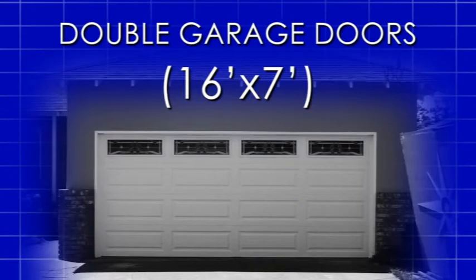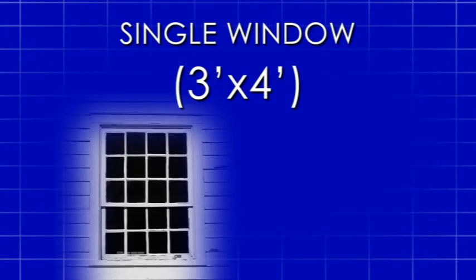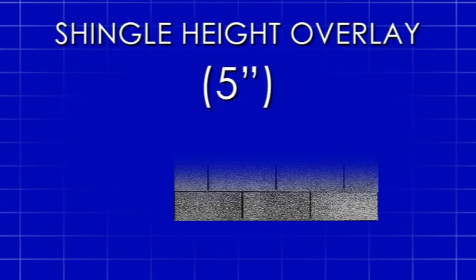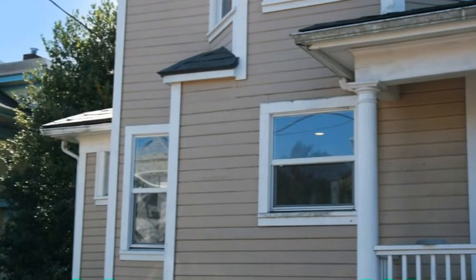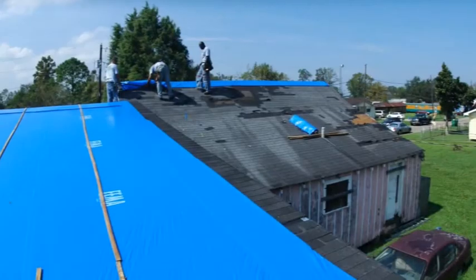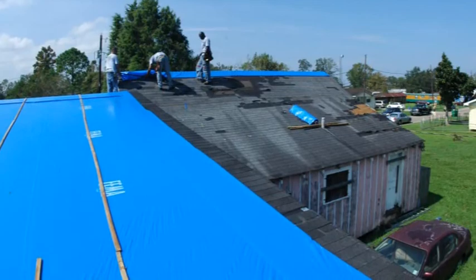Here are some typical reference items: double garage doors, single garage door, entry door, windows (single), shingles (three tab), shingle height, and overlay. Remember, not all roofs are the same front and back. There could easily be two different angles of slope.